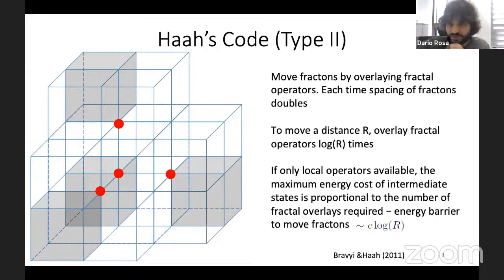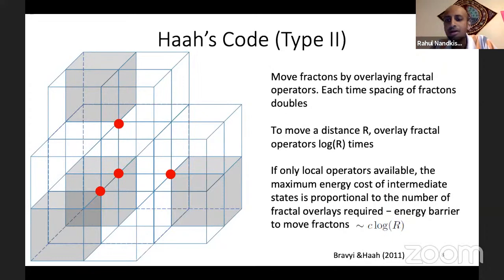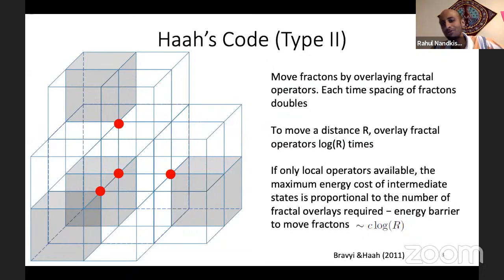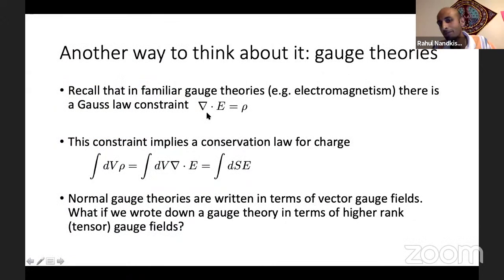A question arose: can fractons be thought of only in terms of stabilizer codes? No, not at all. The stabilizer codes are how people first discovered them, and they're nice because they're exactly solvable. But you should think of these stabilizer code Hamiltonians as fixed-point Hamiltonians. There are fracton phases in some renormalization group sense — there's some big basin of attraction with all sorts of Hamiltonians which are ultimately in the same phase, and the fixed-point Hamiltonian looks like the stabilizer codes.